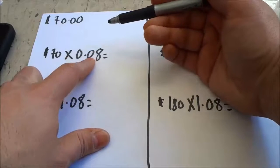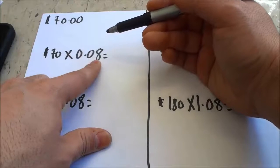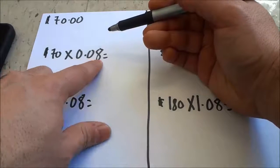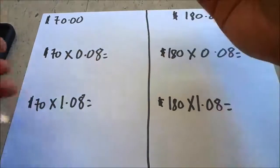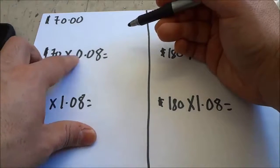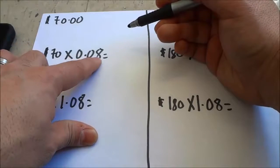So it would be 70 × 0.08 for 8%. But if you had something like a 15% sales tax, it would be 70 × 0.15. But for this example,